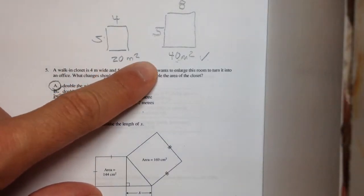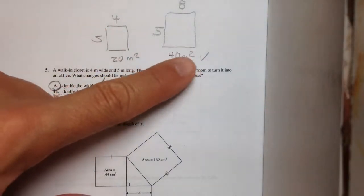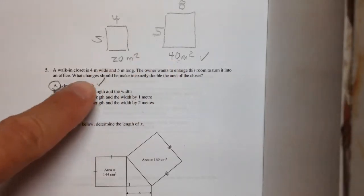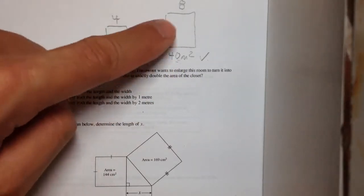So what I would suggest, if you do this question on the provincial, make sure you draw the shapes out, draw the new area you want, and then try what they're saying here, and see if it works.